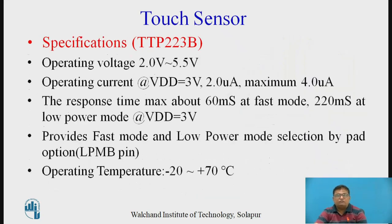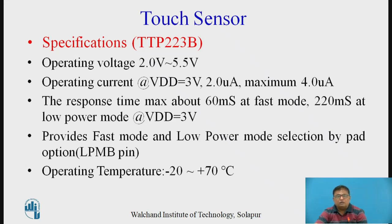The specifications of this sensor TTP223B: its operating voltage is from 2V to a maximum of 5.5V. Operating current is 2 microamperes and maximum up to 4 microamperes. Normally the sensor is operated at 3V, where the current is about 2 microamperes. The response time is nearly 60 milliseconds in fast mode and 220 milliseconds in low power mode. Response time is the time taken by the sensor to produce the output after a touch occurs.